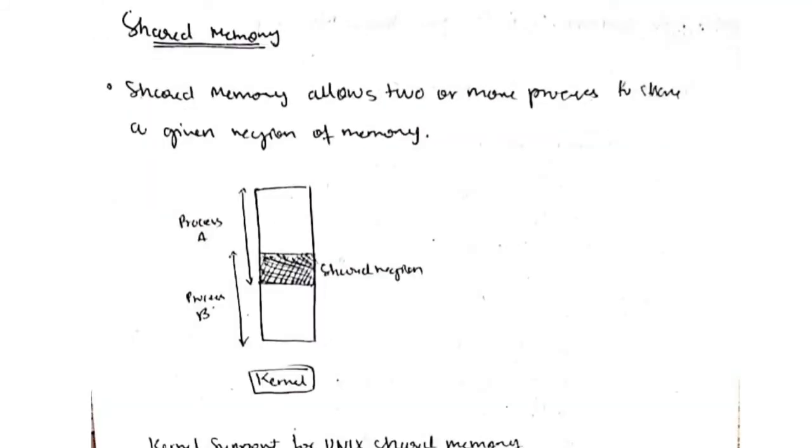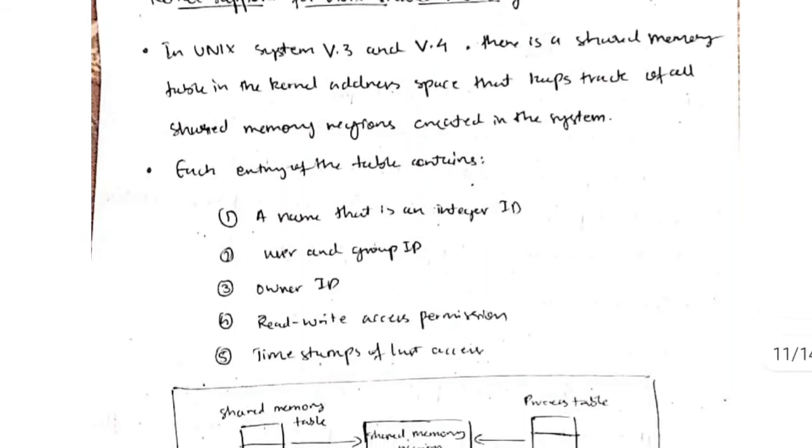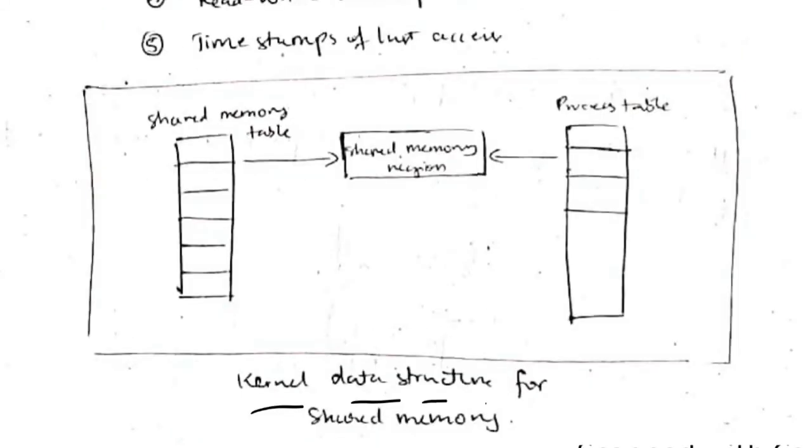The next topic is shared memory. Shared memory means two processes sharing the same part of the storage. The advantage is that there is more efficiency in sharing the memory because it does not create duplicate files in the memory. Kernel also helps in that, it keeps the track of all the shared memory regions, and it has some of the entry table identities like name, user ID, and group ID, owner ID, read-write access permission, and time stamps. This is the diagram of the kernel data structure for the memory.